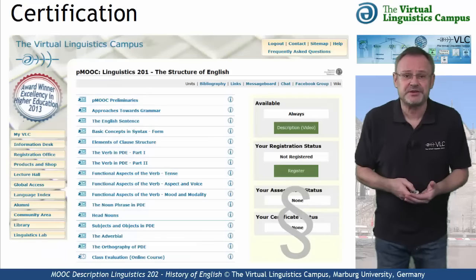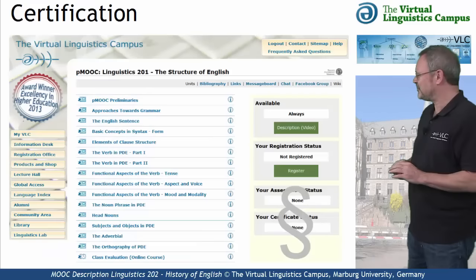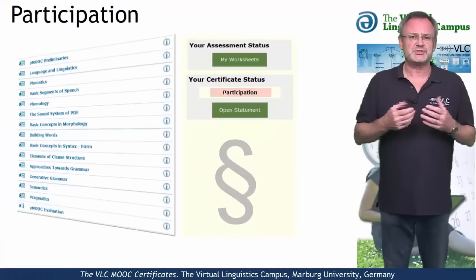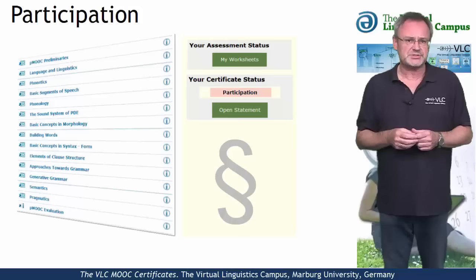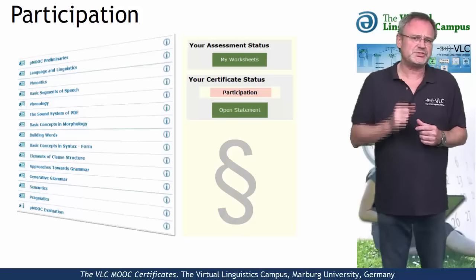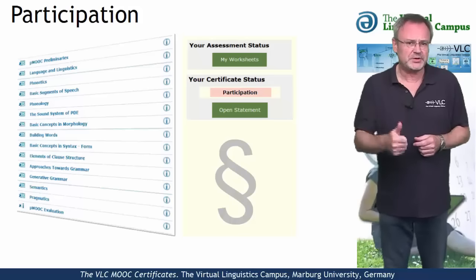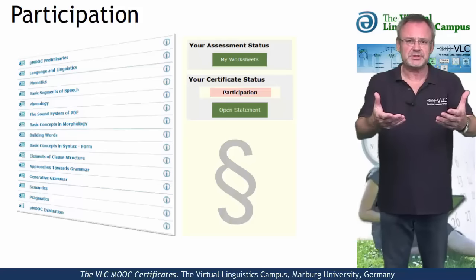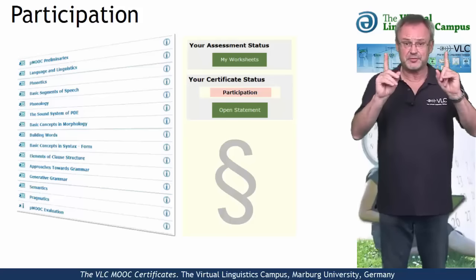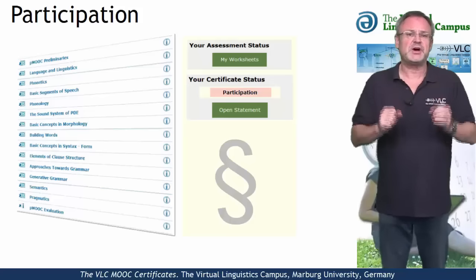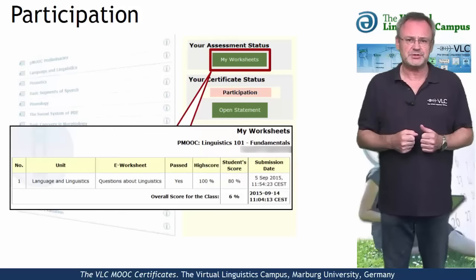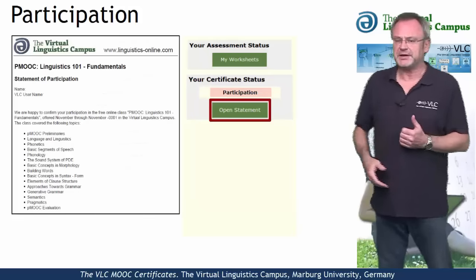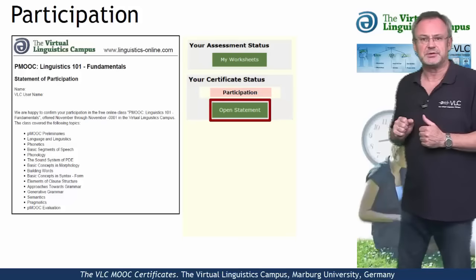And if you want a certificate, here are your options. The simplest option is the statement of participation issued by the Virtual Linguistics Campus. You will receive such a certificate for regular and active participation, including the submission of at least one worksheet and for free. Once you have successfully submitted a worksheet, you will be eligible for such a certificate and can open it by hitting the open statement button.